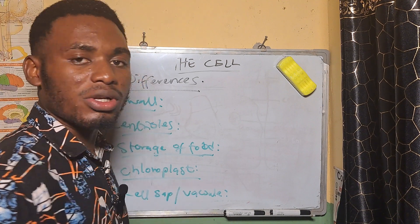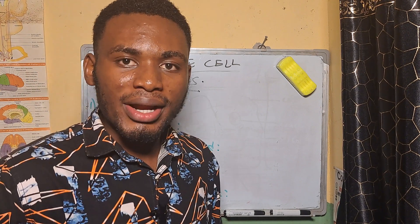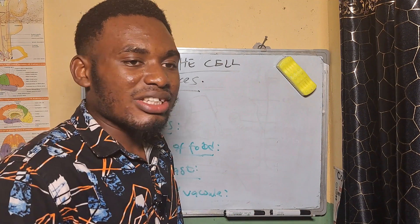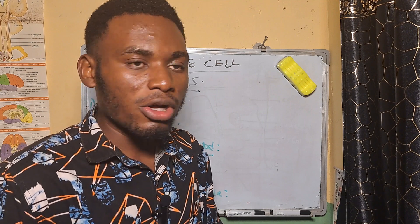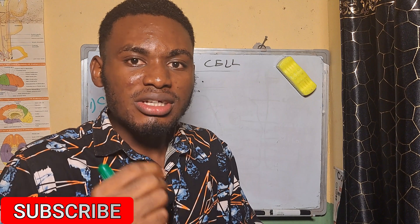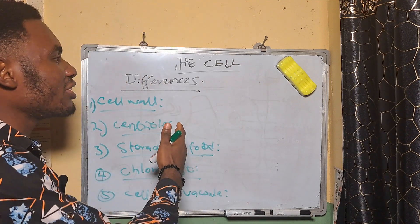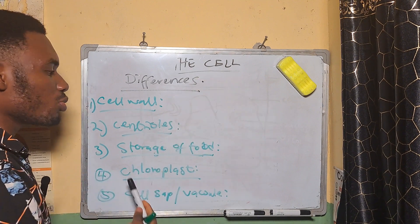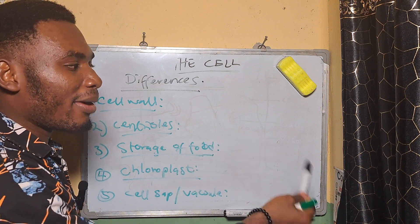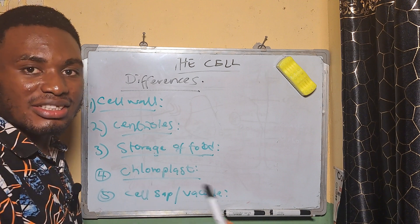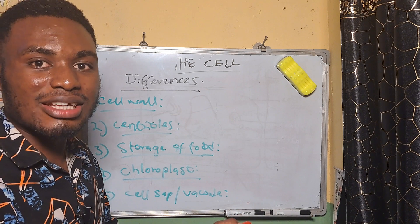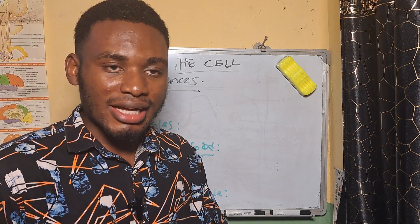The last difference is the cell sap or the vacuole, which is the form in which plant cells store nutrients and some enzymes. The cell sap or vacuole, lined by the tonoplast, is found in the plant cell, but in the animal cell it is usually absent — or if present it is very small. So in the plant cell you have a large cell sap or large vacuole, while in the animal cell the vacuole is very small if even present.